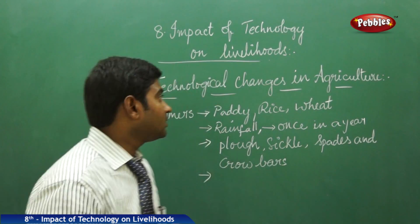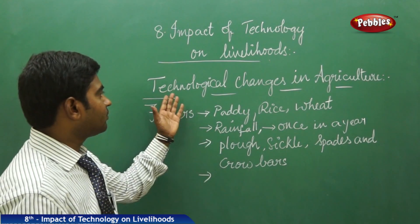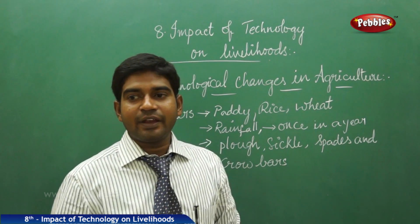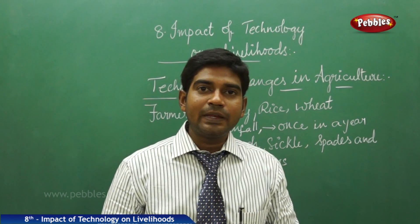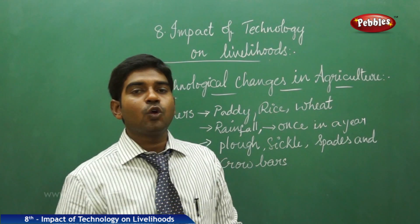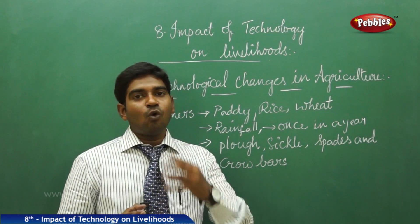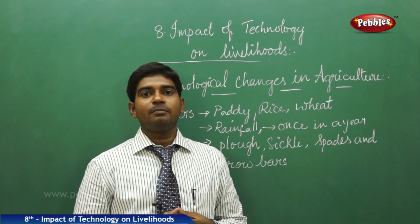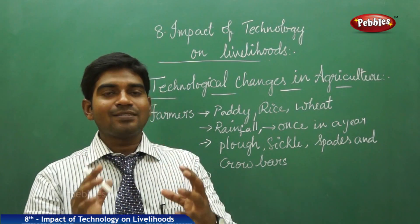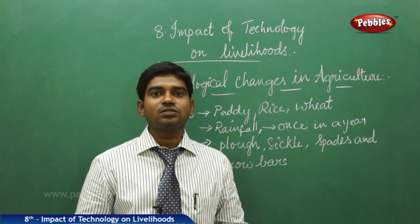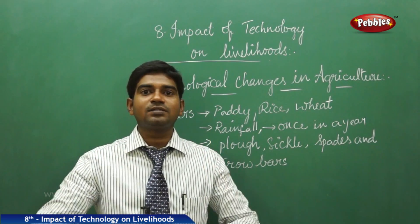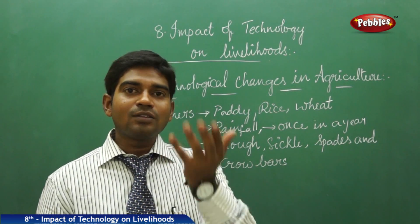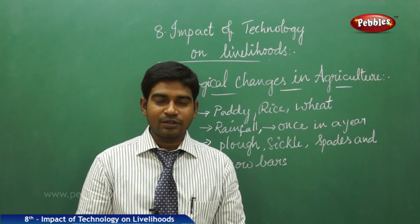We shall discuss now what is the impact of technology on agriculture. In a country like India, where 80 percent of people depend completely on agriculture, we are going to understand what is the traditional way of doing agriculture, because agriculture is a basic occupation of individuals in India and most families depend on agriculture or its allied activities.